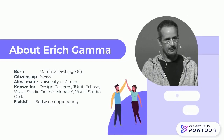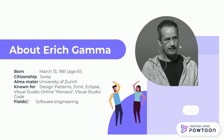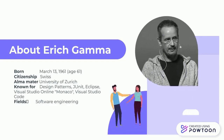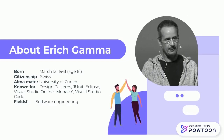Eric Gamma was born in 1961. He is a Swiss computer scientist and one of the four co-authors of the software engineering textbook. He is an expert in Java development, and with Kent Beck co-wrote the JUnit software testing framework, which helped create test-driven development. He also leads the design of the xUnit software and influenced the xUnit software industry.